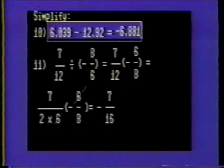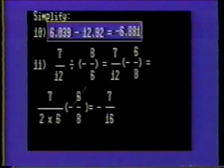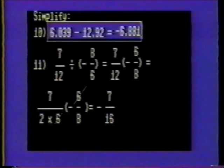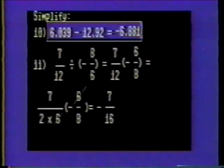Number ten: simplify the following problem. Align the decimals and subtract 6.039 minus 12.92, which is negative 6.881.